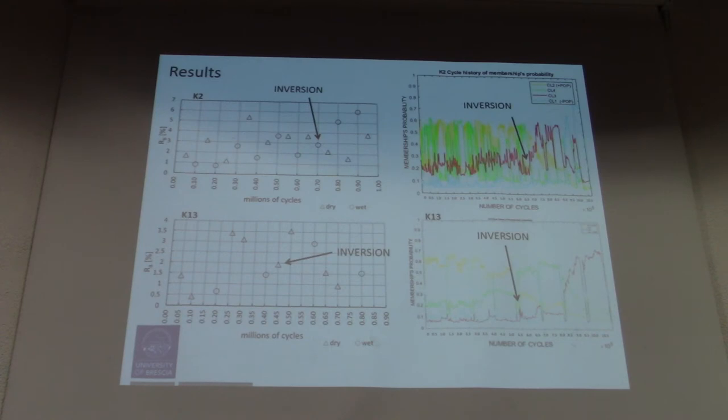We obtain the same results from machine learning. Starting from images and starting from vibration, we obtain the same results, which is an inversion between what we can see before a certain number of cycles during an alternating dry-wet test.